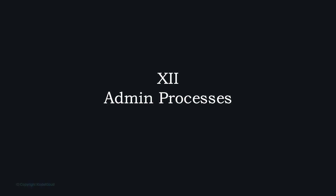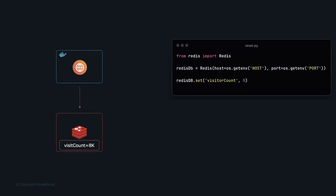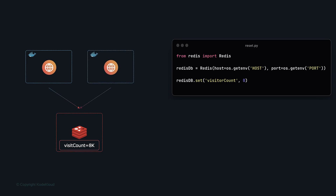The last and final factor is admin processes. Redis stores the total visitor count — if that number is inaccurate and needs resetting, that's a one-time admin task performed via a script. Similar tasks include database migrations or fixing user records. The 12-factor app recommends that admin tasks be kept separate from application processes and run as separate one-off processes on identical systems as the production environment. A separate Docker container can connect to the same Redis database, run the reset script, and then terminate.